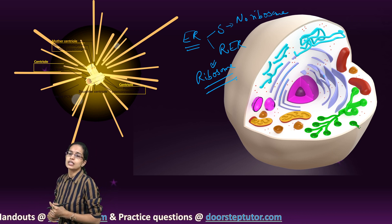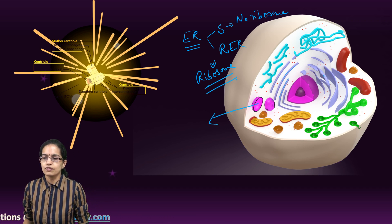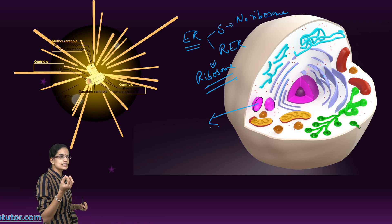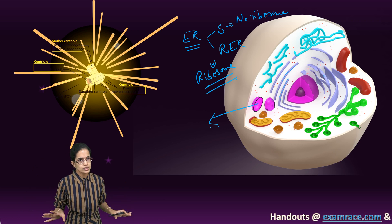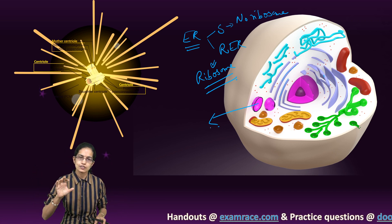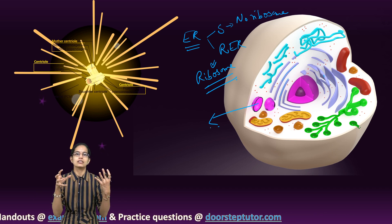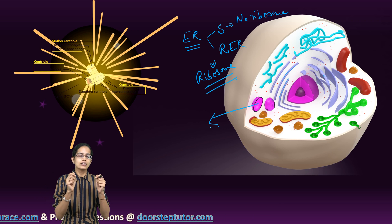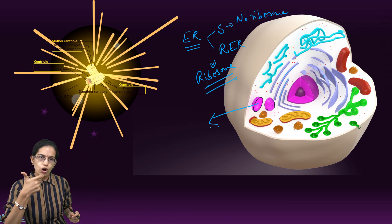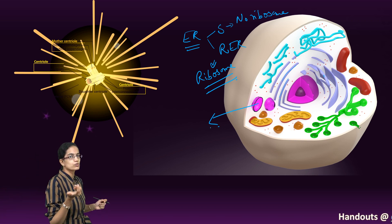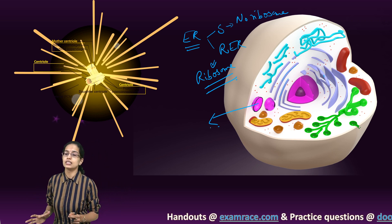The next important constituents are the vacuoles. These vacuoles are smaller in the case of animal cells and they are spread across the cytoplasm. They have fluid filled within them and help to maintain the turgidity of the cell — that means they provide shape, basic form and structure. The vacuoles have dissolved sugars, minerals, and waste that is present in the cell.